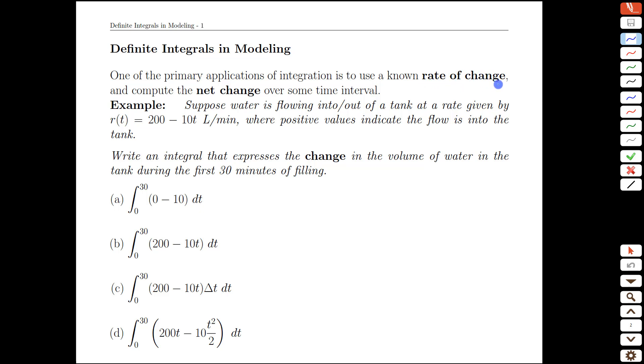The general formulation of that is taking a rate of change, say of position, rate of change would be velocity, and then finding the net change of that same underlying variable. So finding the net change in position given the rate of change of position. It turns out that integration is going to be our gateway for doing that.